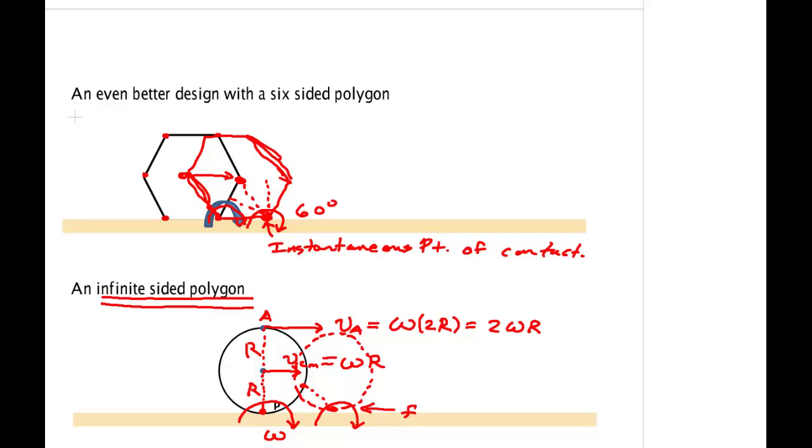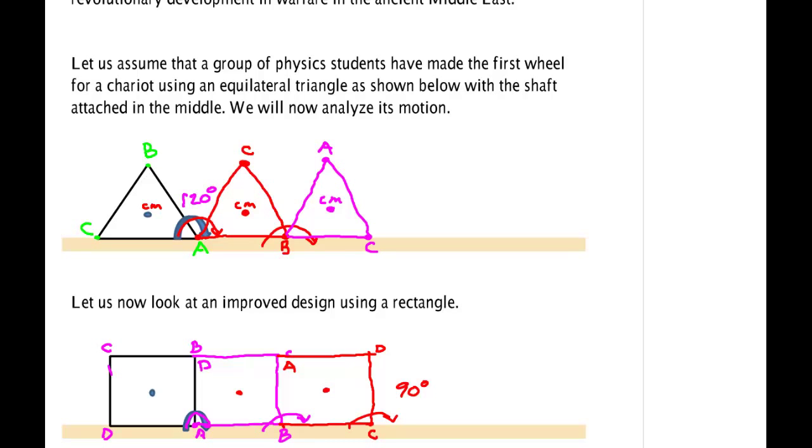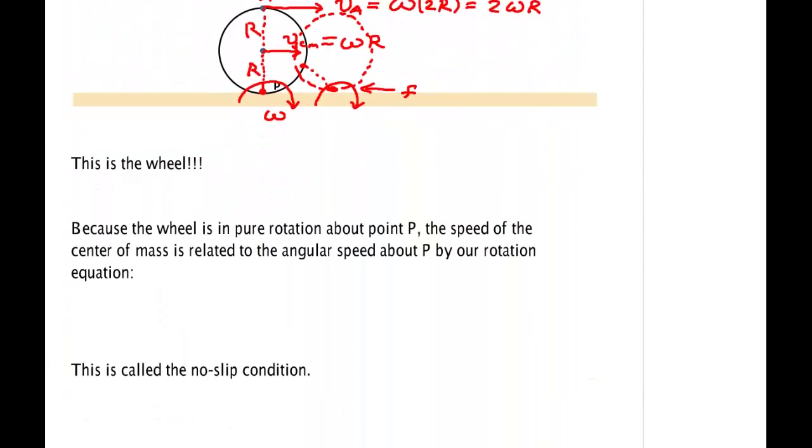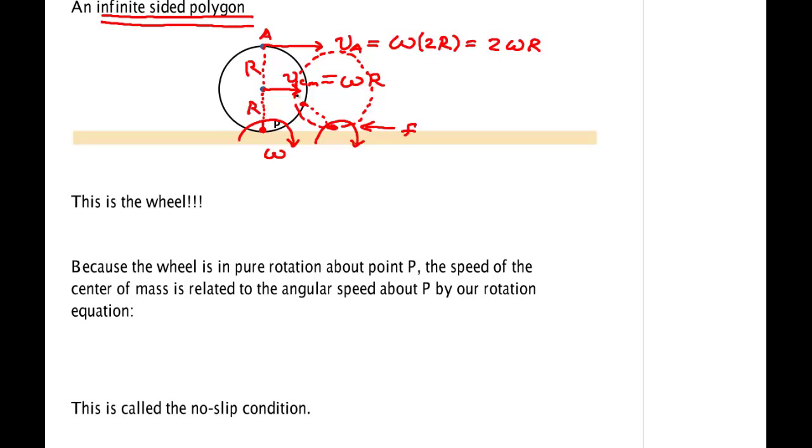So again, let me go back and re-emphasize one more time. The object undergoing rolling without slipping is in pure rotation about an axis through an instantaneous point of contact with the floor. And that instantaneous point of contact shifts to different parts of the wheel as the wheel rolls. Now, as we've already shown, because of this, the velocity of the center of mass is given by omega r.